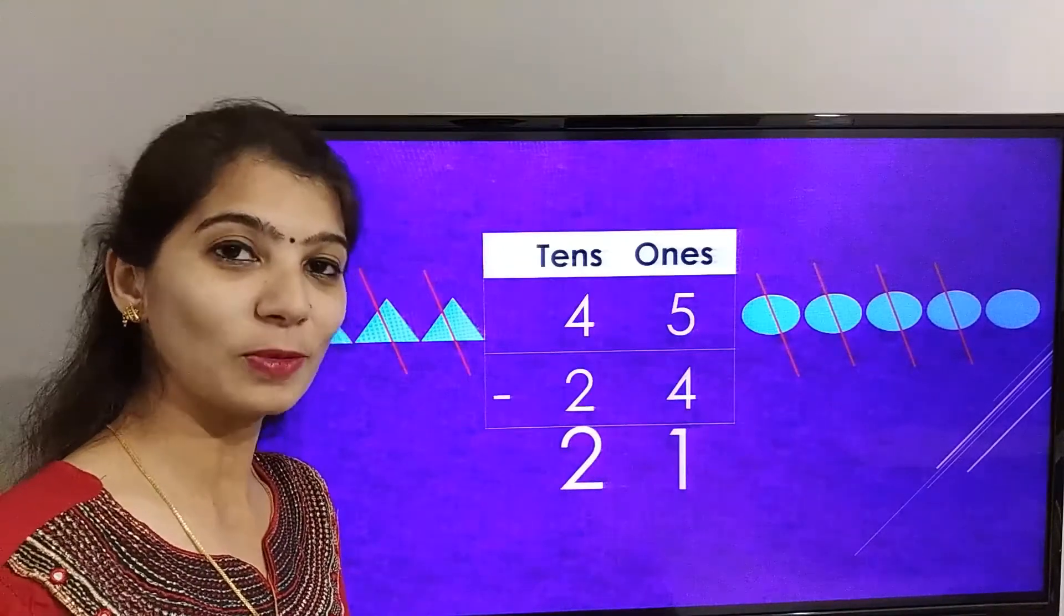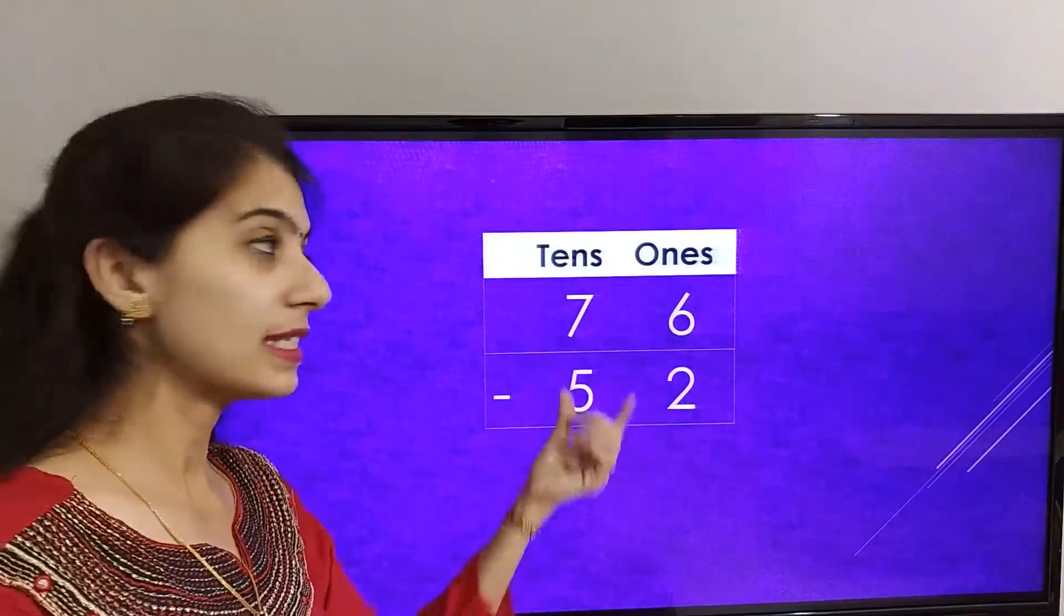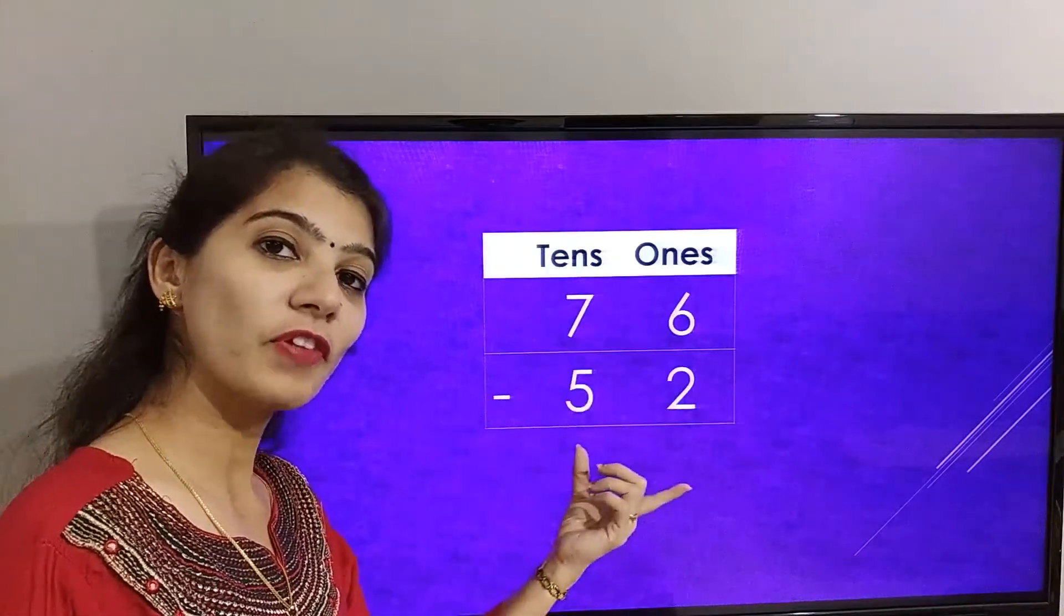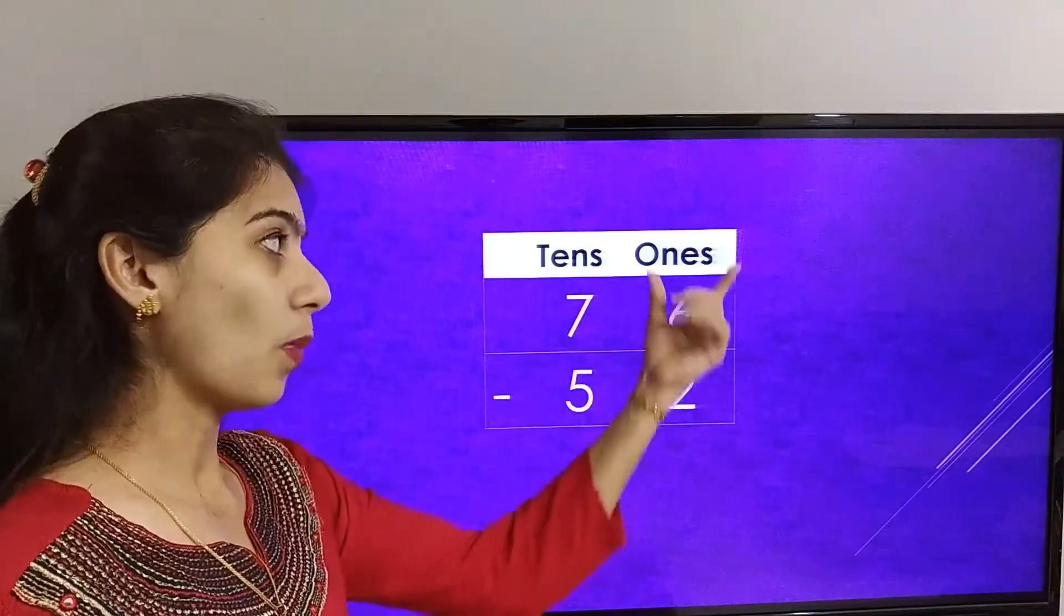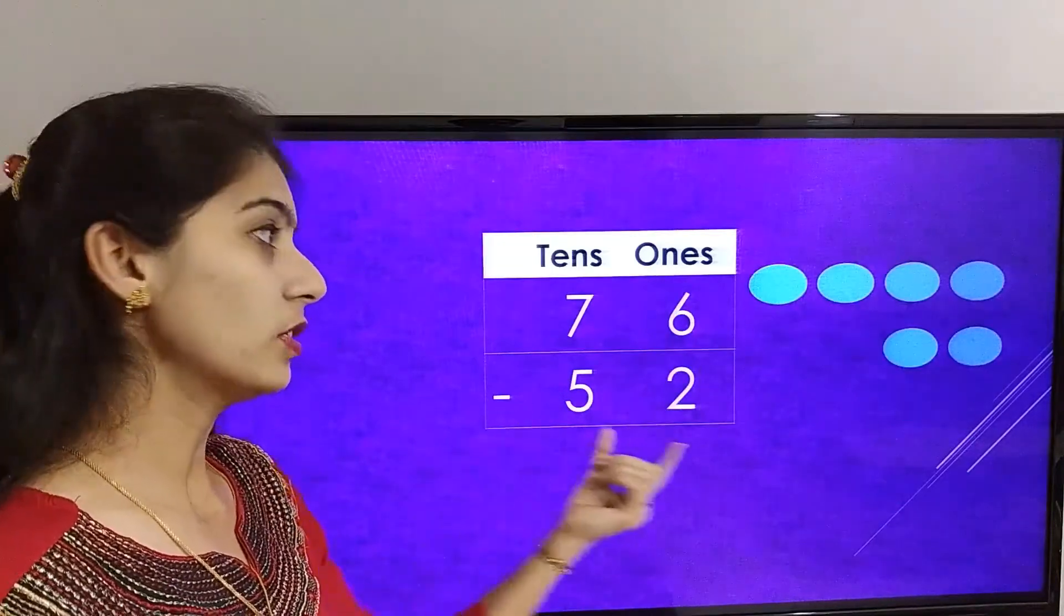The number on the screen is 76 minus 52. The number in the ones place is 6 minus 2.